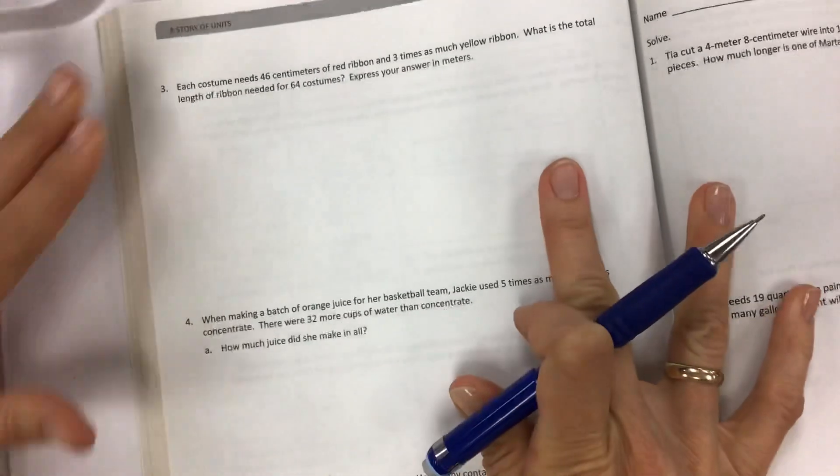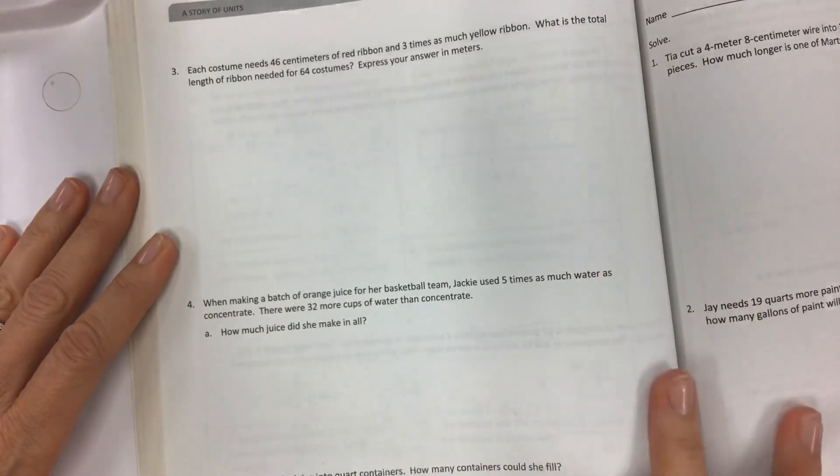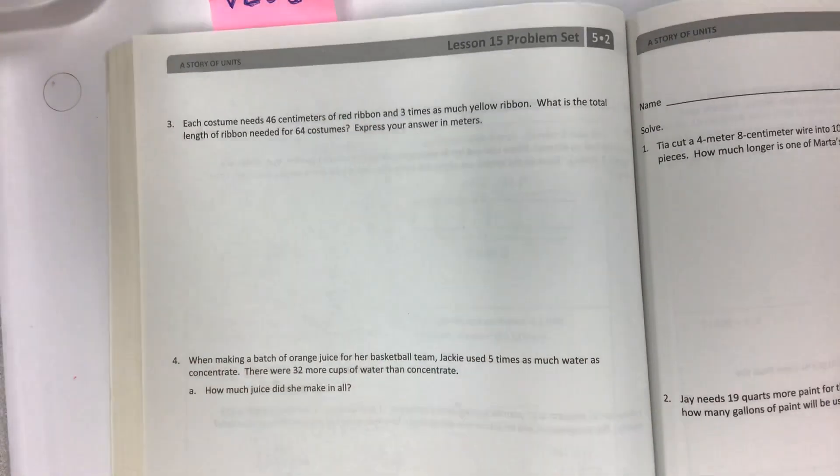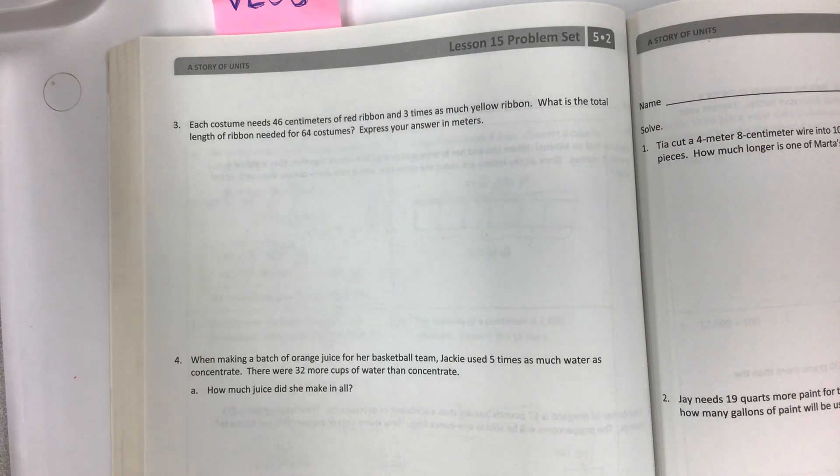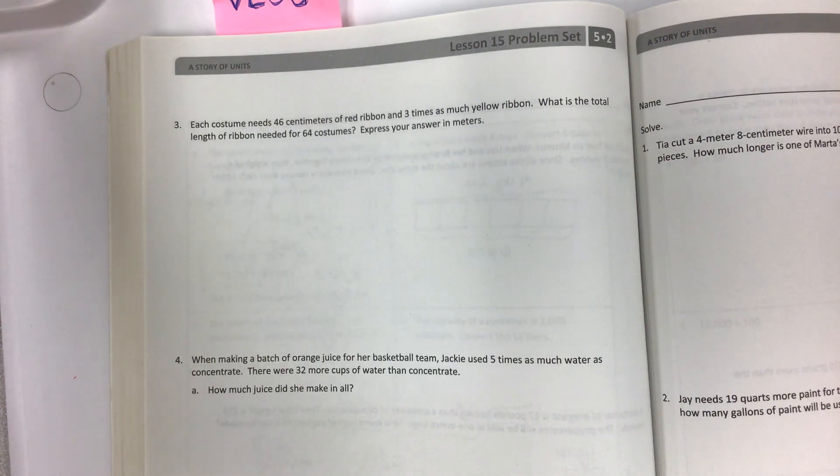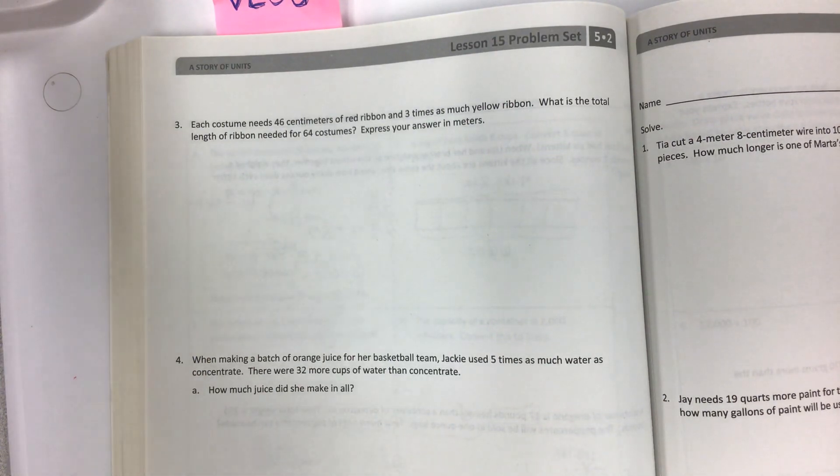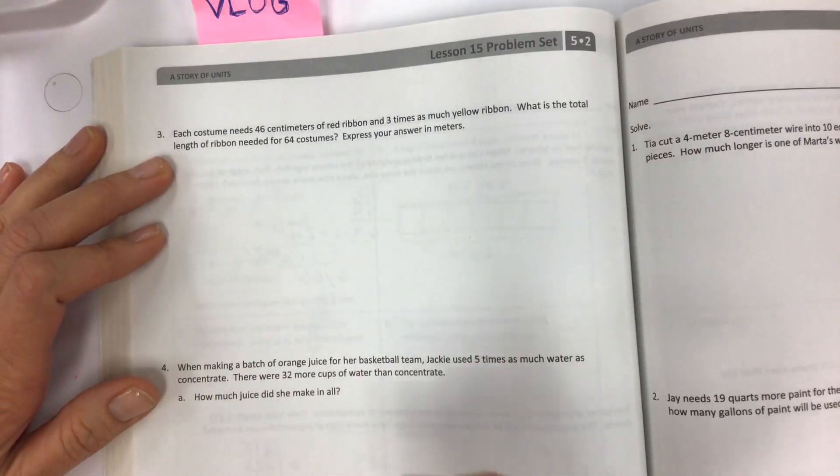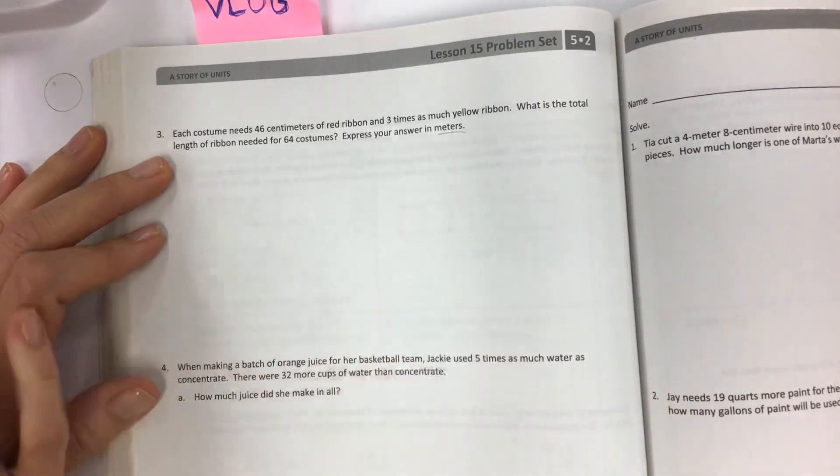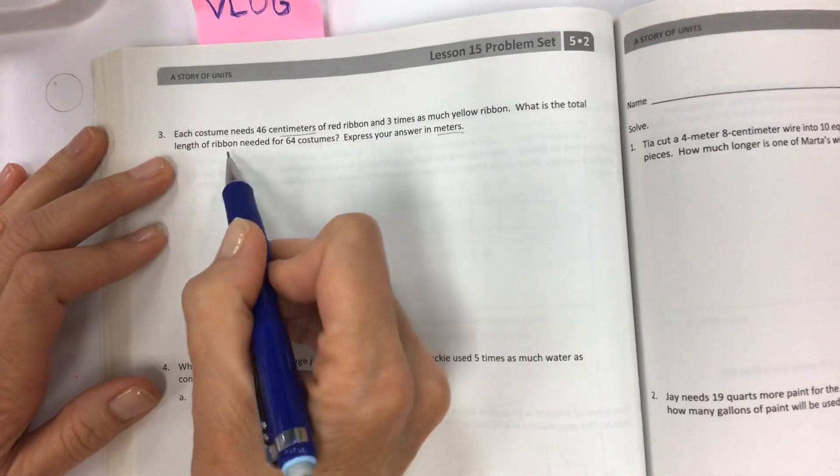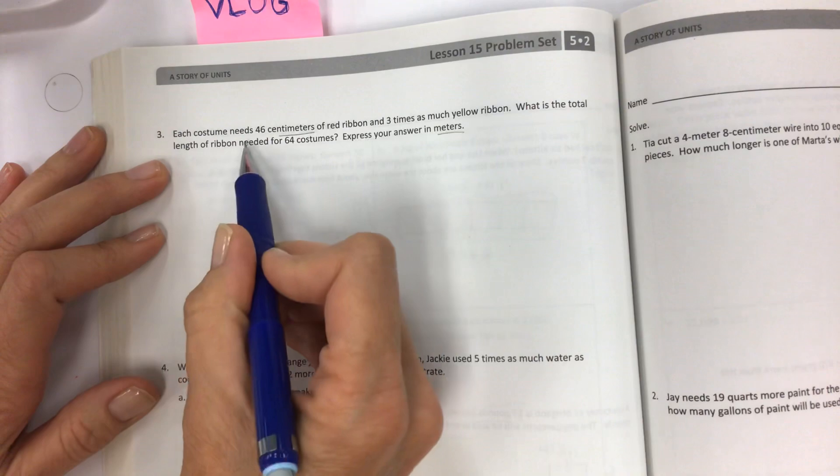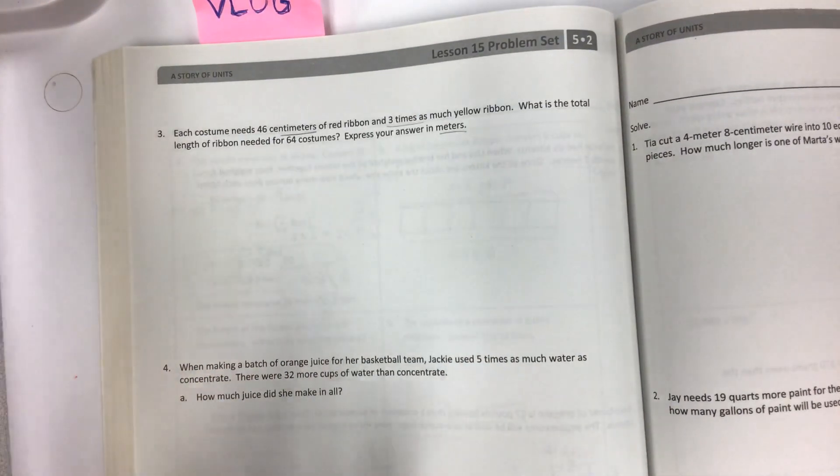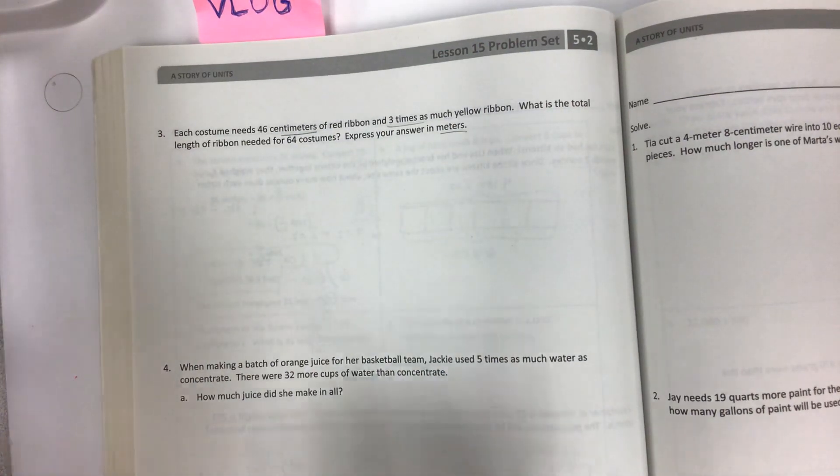So the next page is all that we have. We have 3 and then 4a and B. Each costume needs 46 centimeters of red ribbon and 3 times as much yellow ribbon. What is the total length of ribbon needed for 64 costumes? Express your answer in meters. So let's do again a tape diagram. It can really help you.